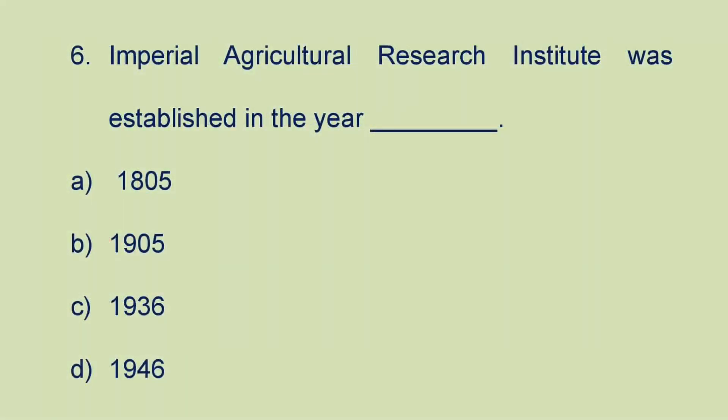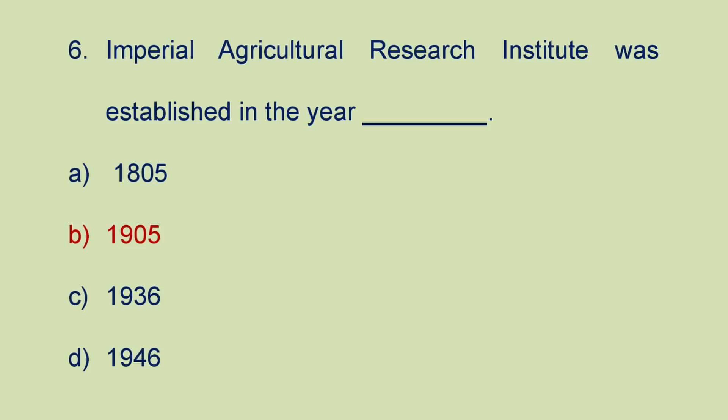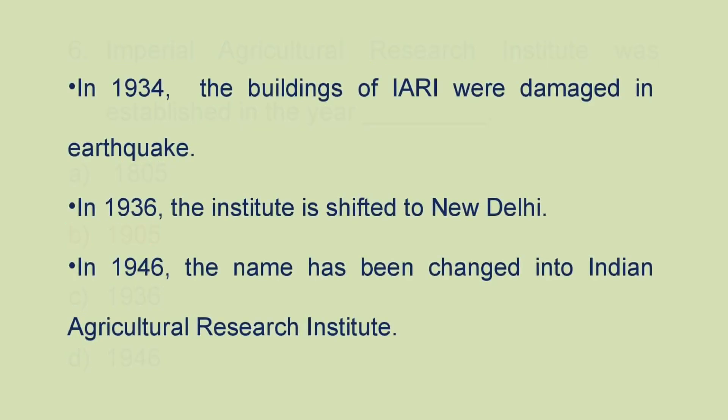Next question: Imperial Agricultural Research Institute was established in the year A) 1805, B) 1905, C) 1936, or D) 1946. IARI was established in 1905. In 1934, the buildings of IARI were damaged in an earthquake. In 1936, the institute was shifted to New Delhi. In 1946, the name was changed to Indian Agricultural Research Institute.